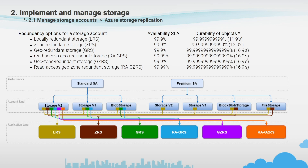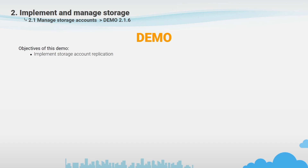The primary difference between GRS and GZRS is how data is replicated in the primary region. Within the secondary location, data is always replicated synchronously three times using LRS. We also have read-access variants: RA-GRS and RA-GZRS. When you enable read access to the secondary region, your data is available to be read at all times, including when the primary region becomes unavailable. Because it is not easy to visualize how replication is available for each storage account kind, I prepared a diagram — for example, for premium storage accounts you have just LRS and ZRS.